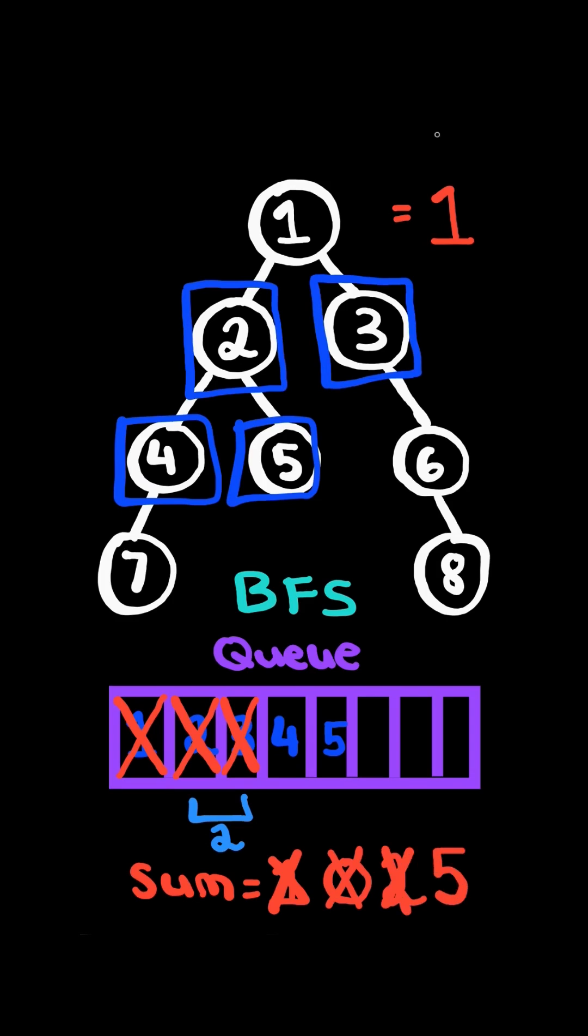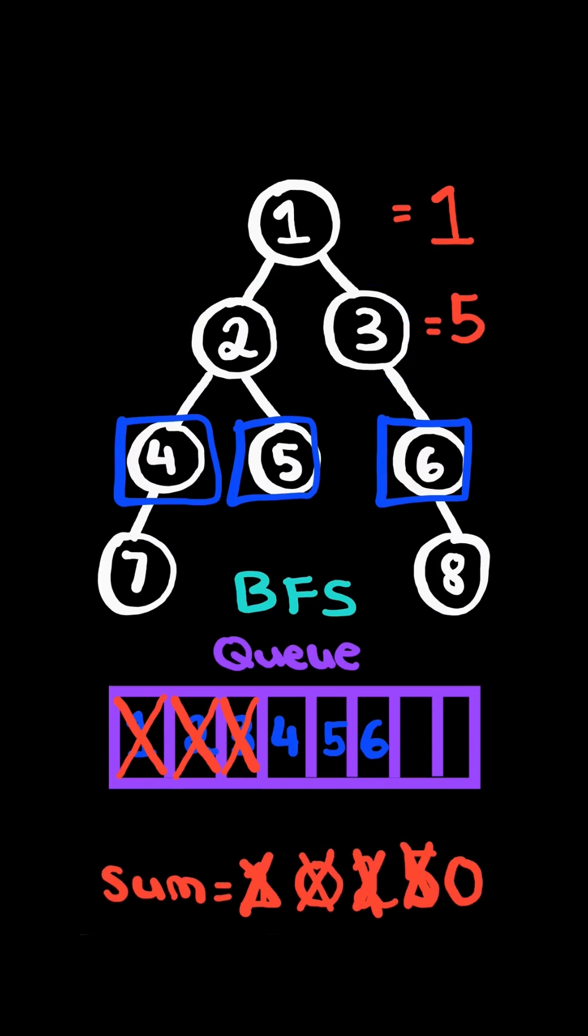Now we pop 3, add it to the sum and append its child 6. And so we went through the second level sum. Now we reset sum to 0 and continue with the next level.